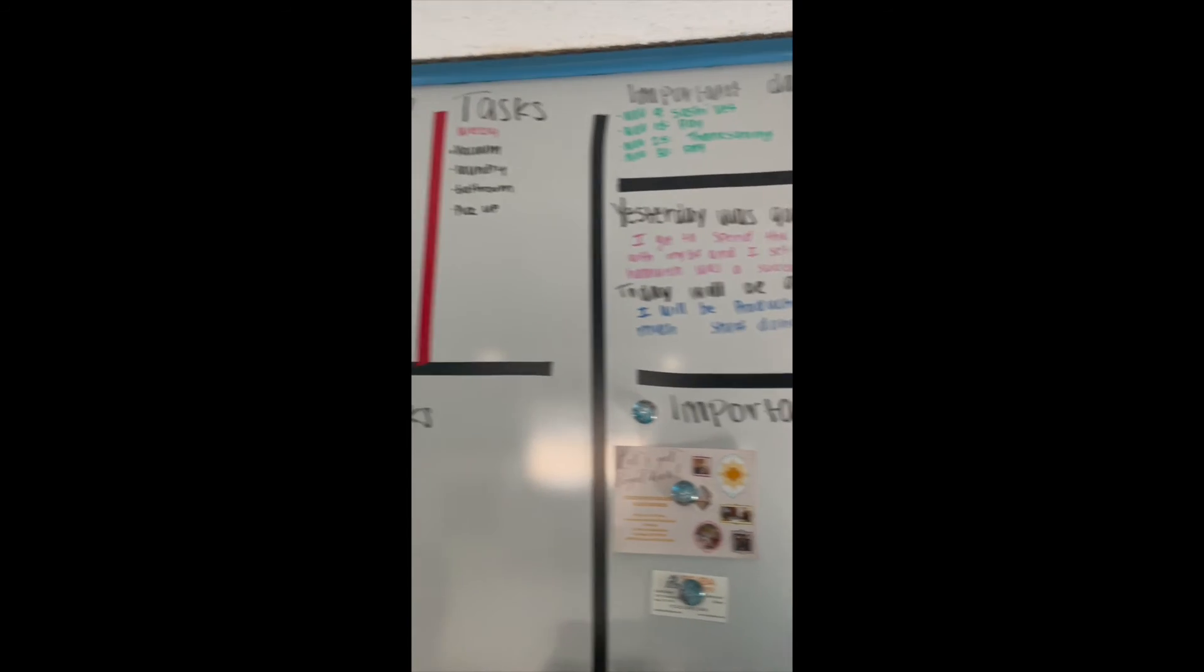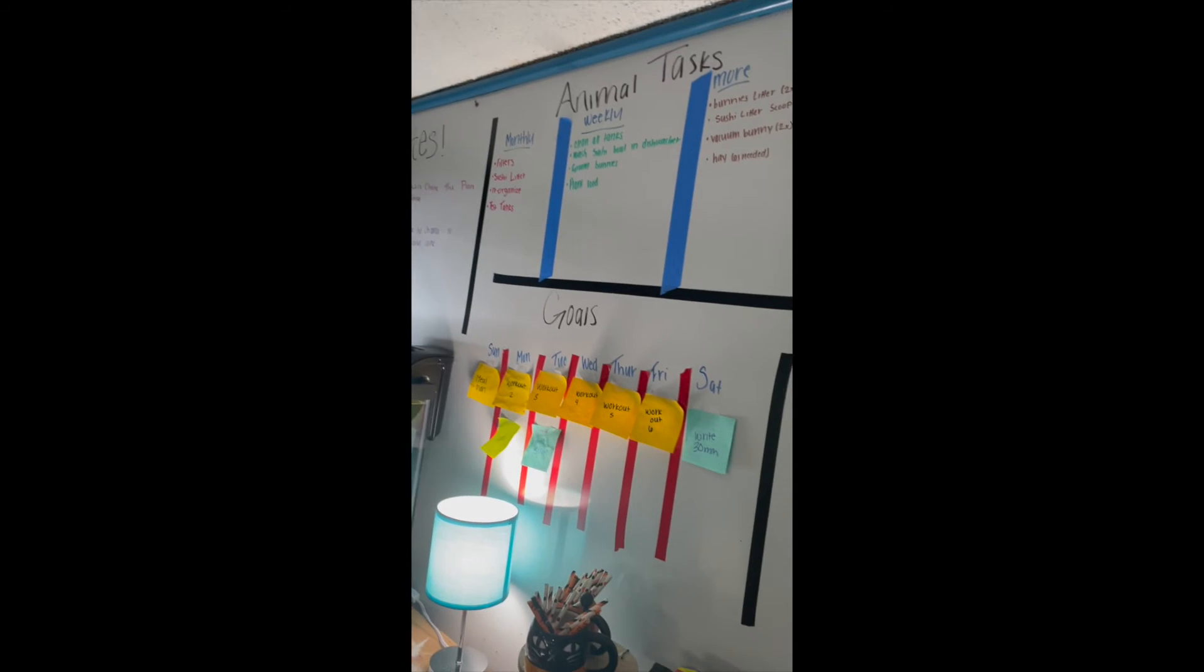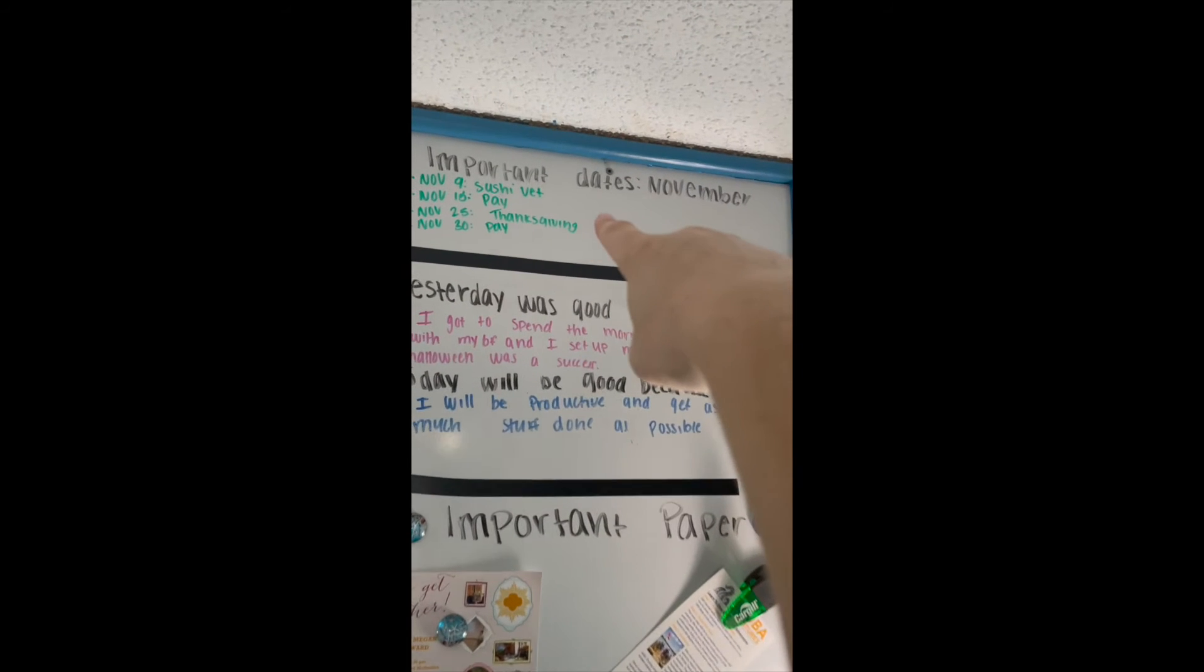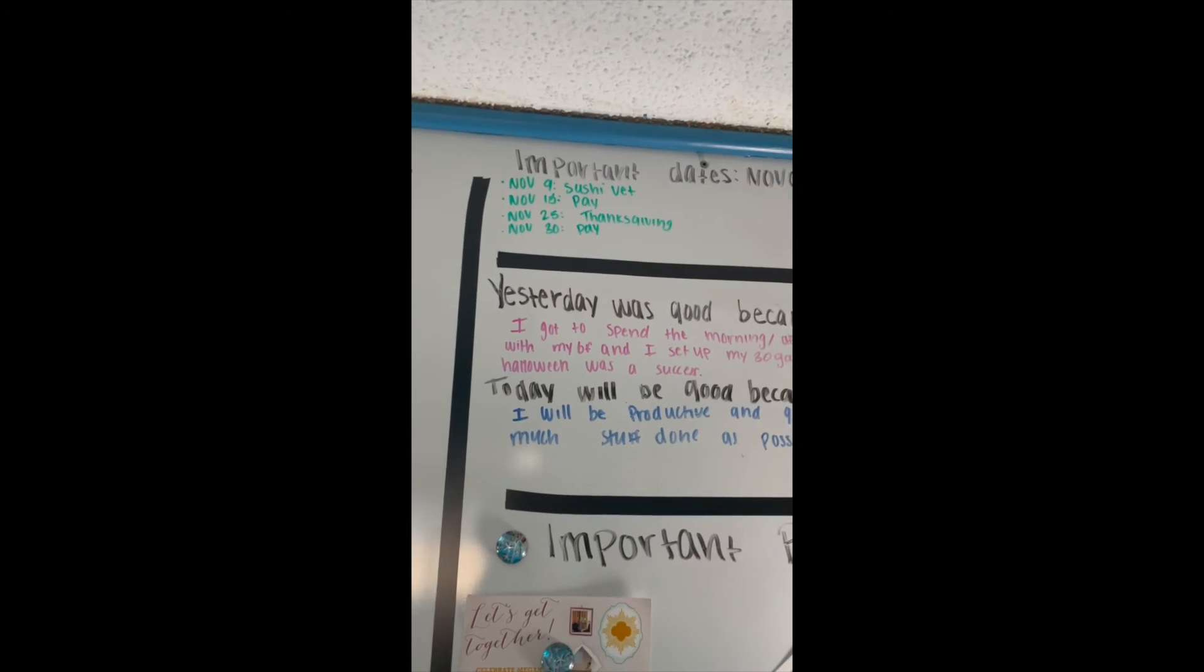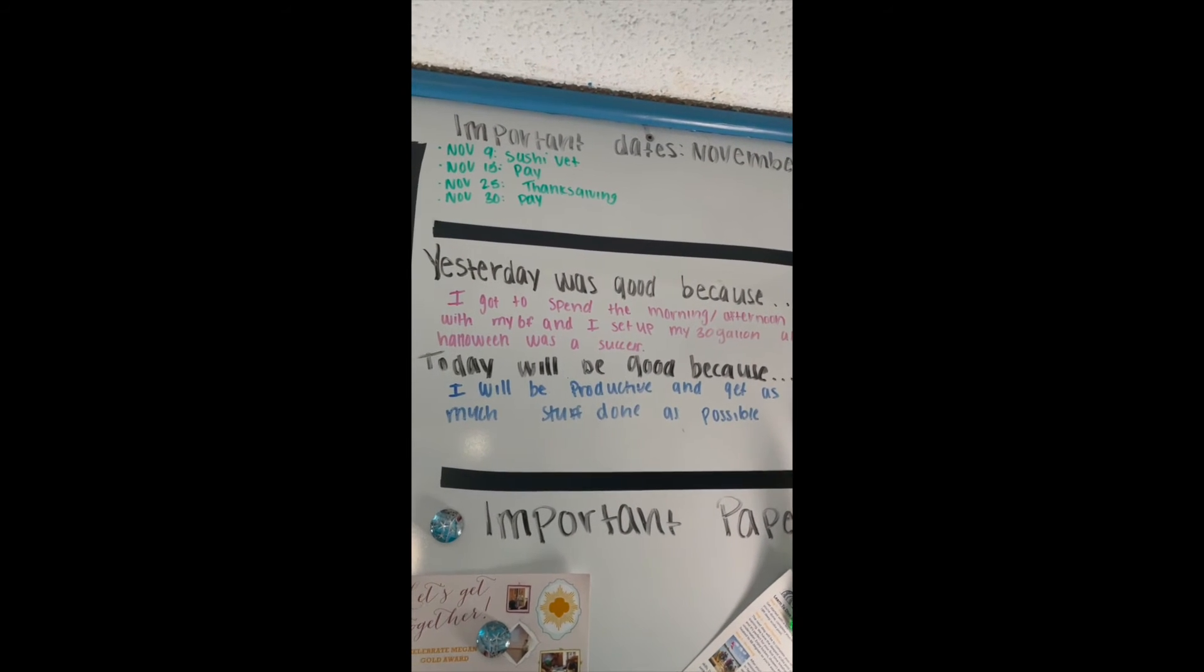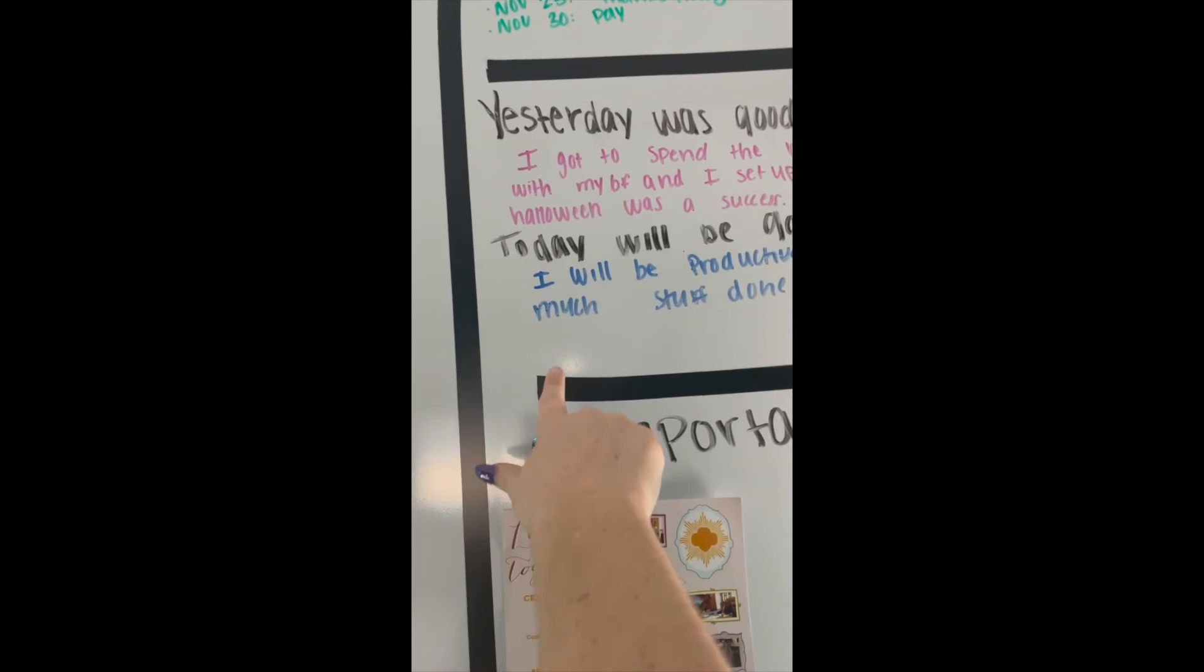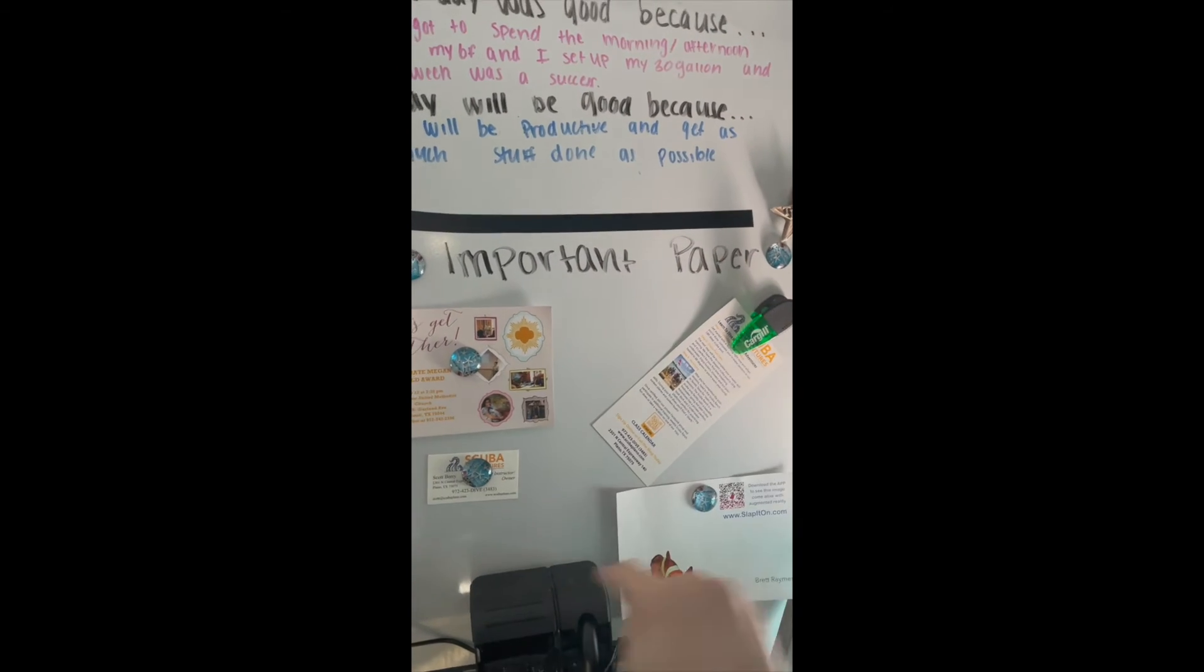All right, you guys, I just finished putting it all on the board and I got to say, I like it. So we're going to do it differently this time. I'm going to start over here. So up there, I've got my important dates. I've got my cat vet visit, my two paydays and then Thanksgiving day. That's really all I have going on in November. So it's going to be a pretty easy month, hopefully. And I've got my, why was yesterday good? And why will today be good? I added that from the last time. And these are my important papers.